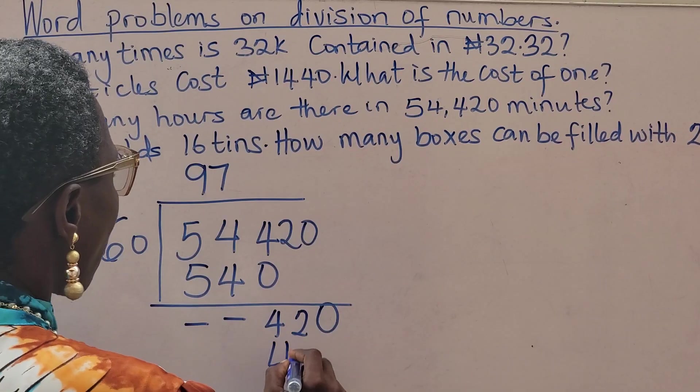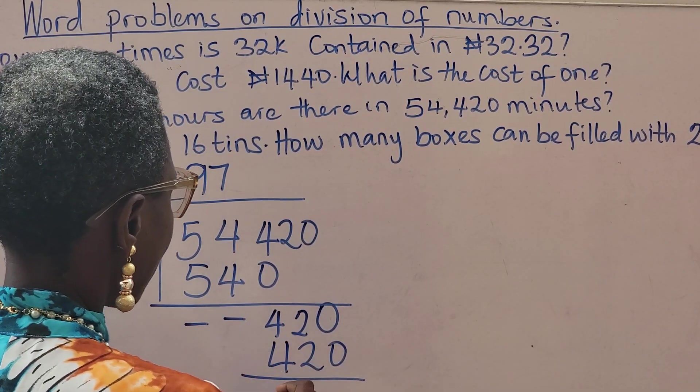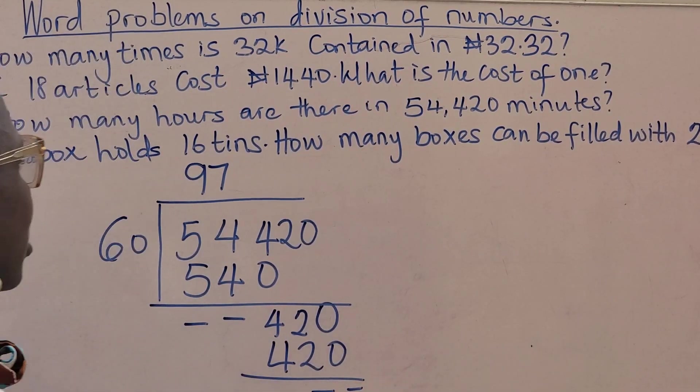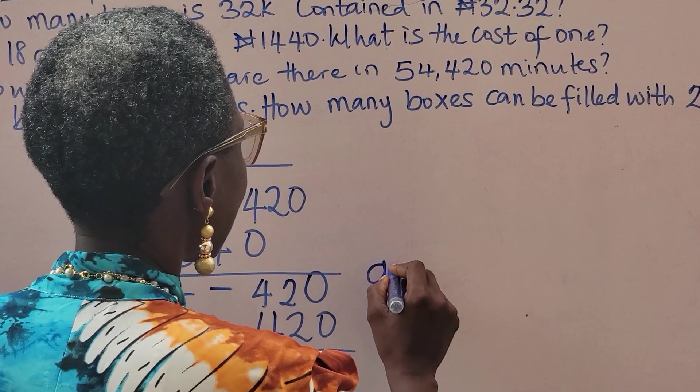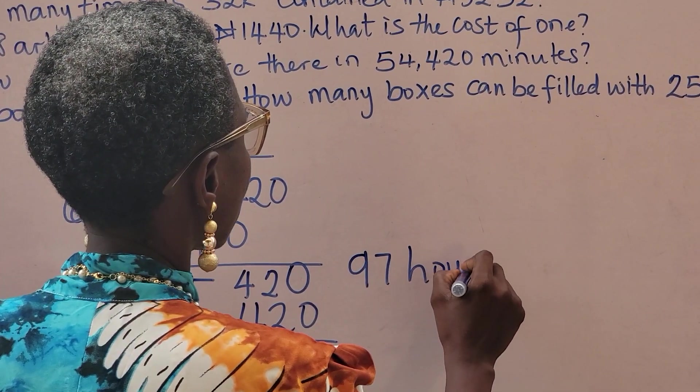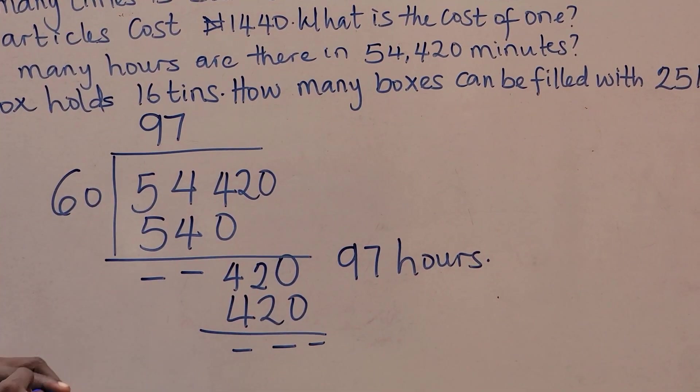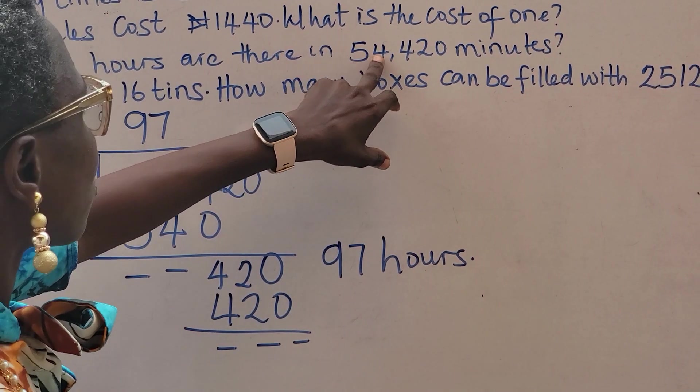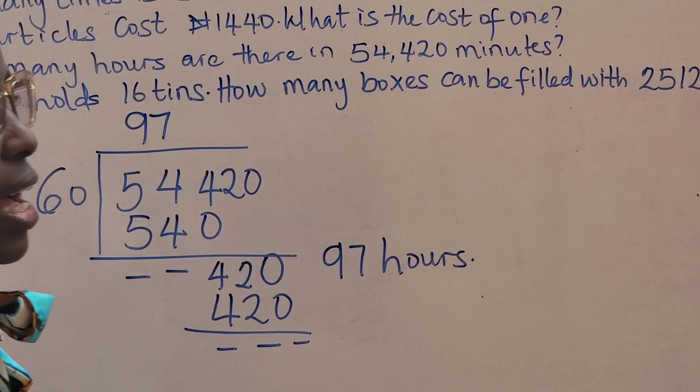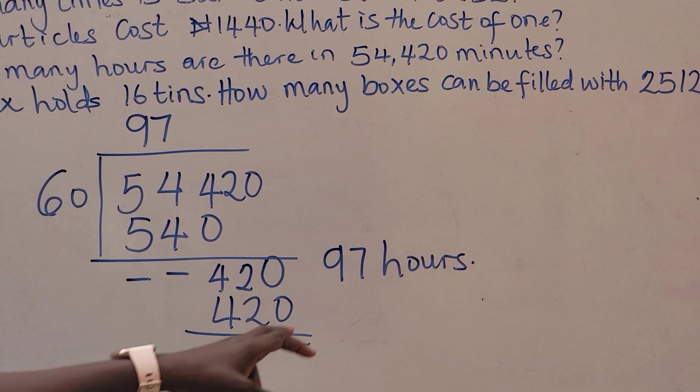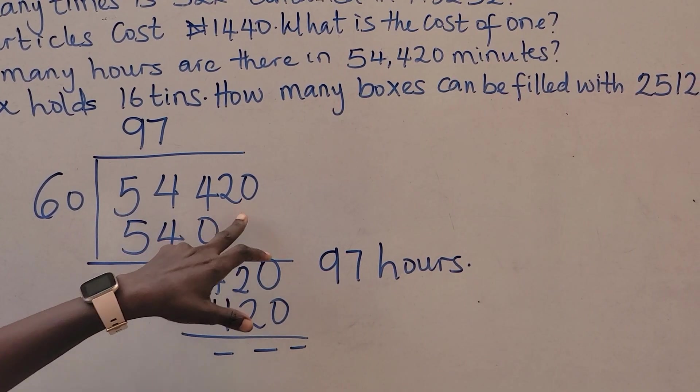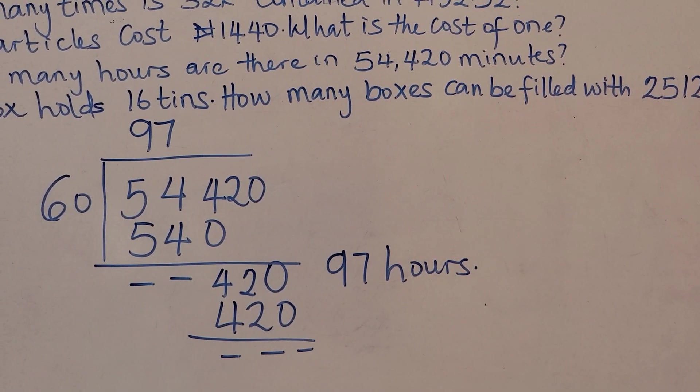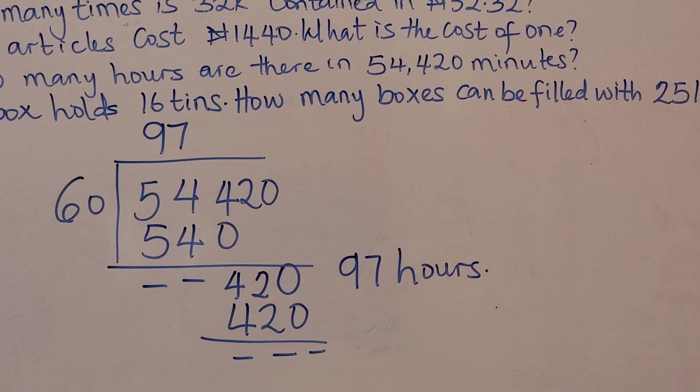60 times 7 is 420. By the time you take away, you have your 0. That means we have 97 hours. So 97 hours make 54,420 minutes. And if you want to check, just go ahead and multiply 97 by 60. It will definitely give you 54,420.